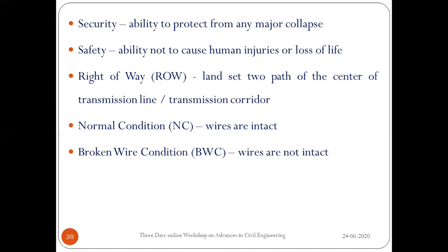Security is used to protect against major collapse, and safety is to protect linemen and workers from injuries and loss of life. The three major criteria for transmission line tower design are: reliability, security, and safety. To protect towers from external disturbances like falling trees or building construction, a space called right of way (ROW) or transmission corridor is provided on either side, with dimensions depending on voltage level.